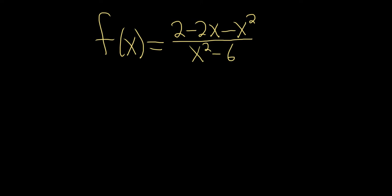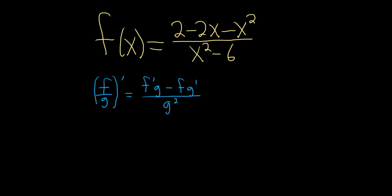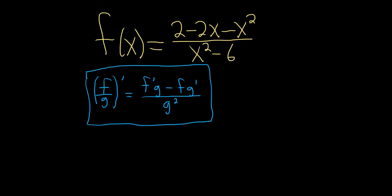In this problem we're going to find the derivative of this function using the quotient rule. Recall the formula: if you have a function f divided by a function g and you want to compute the derivative, it's the derivative of the top piece times the bottom piece, minus the top piece times the derivative of the bottom, all divided by the bottom squared. So f is your top and g is your bottom — derivative of the top times the bottom, minus the top times the derivative of the bottom, over the bottom squared. This is a classic quotient rule problem because there's really nothing else you can do to simplify it.